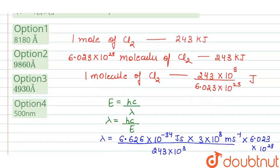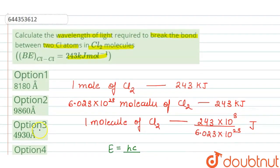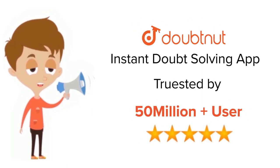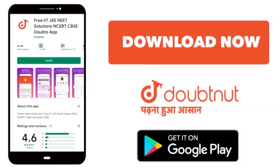So our correct option will be option 3, 4930 angstrom. For class 6 to 12th, IIT-JEE and NEET level, trusted by more than 5 crore students. Download Doubtnet app today.